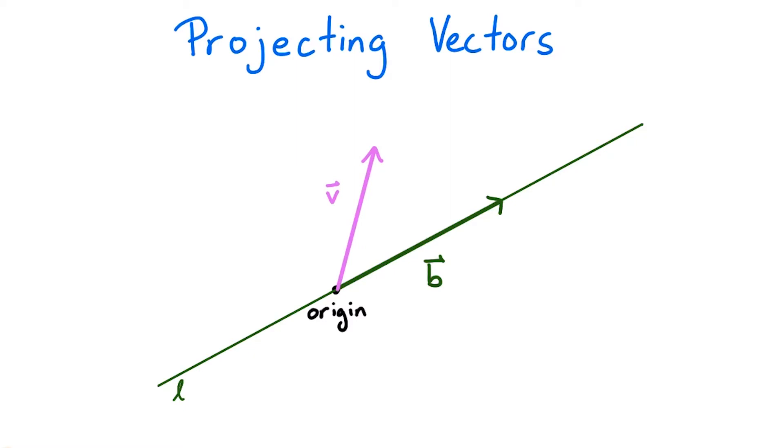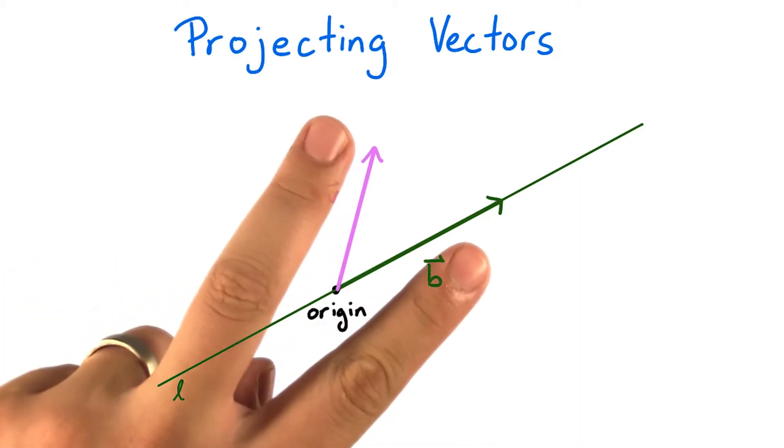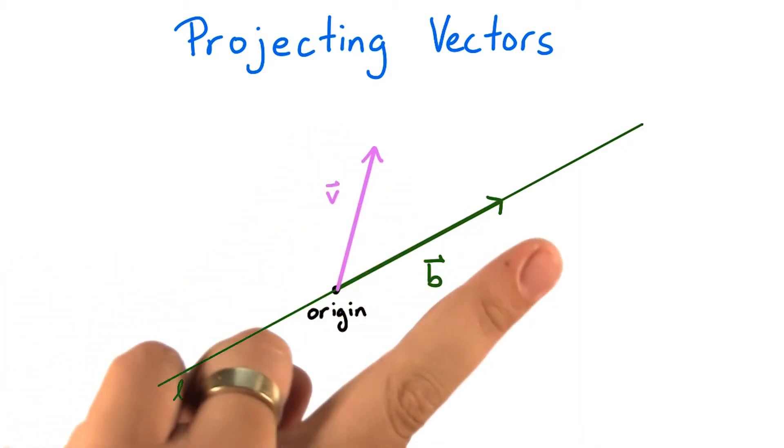We are going to consider the process of projecting a vector v onto the basis vector b. One way to describe what this means is to let v emanate from the origin, and then imagine rotating your point of view until you are looking at b and v in the same plane.